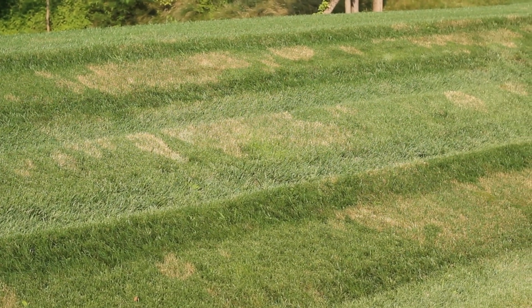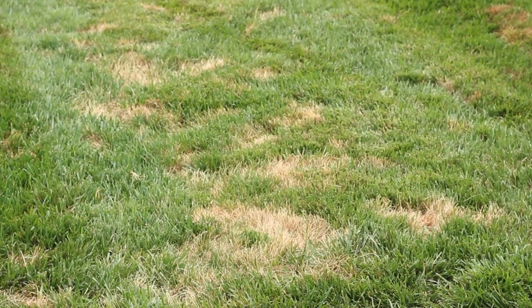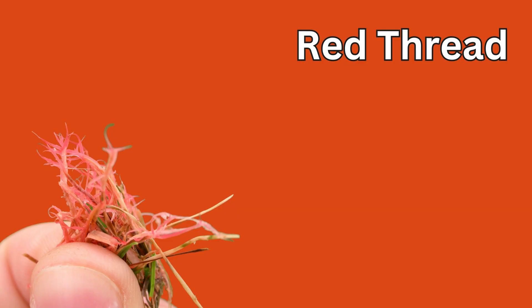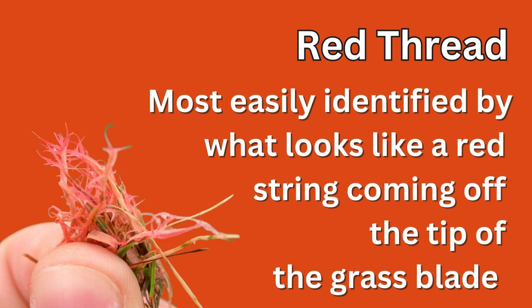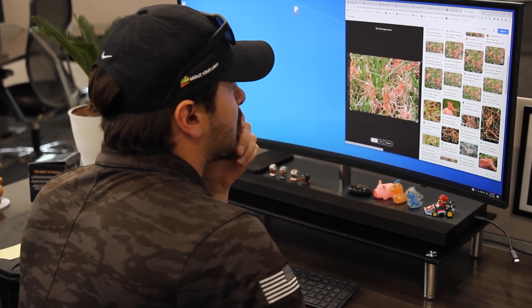First, I'm going to go over some common turfgrass diseases for our area. The first disease we're going to go over is red thread. This is most common in our area during the spring and again in the fall. Red thread is most easily identified by what looks like a red string coming off the tip of the grass blade, causing your turfgrass to have reddish or pinkish patches throughout the lawn.